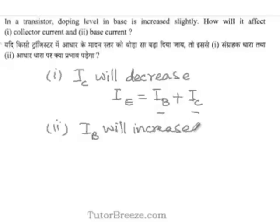Normally in a transistor, the base is kept thin and lightly doped so that the base current is minimum and the emitter current is approximately equal to the collector current.